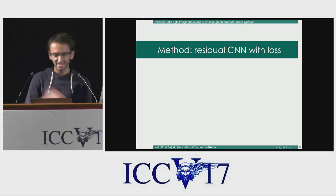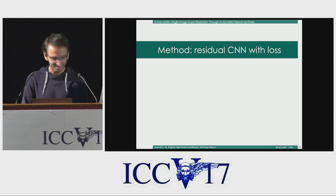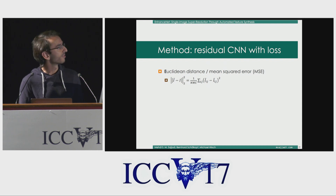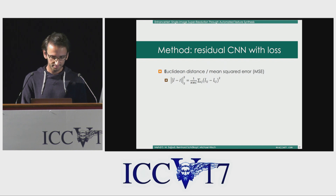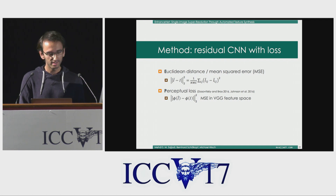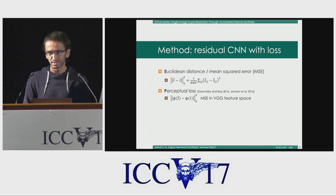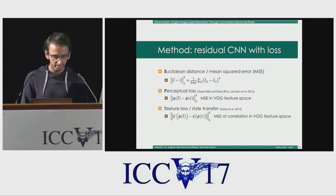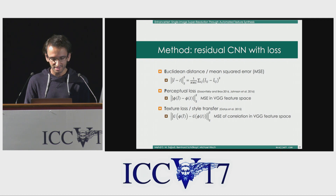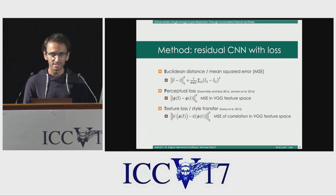So what do we do? We use a residual deep convolutional network — the architecture is not even that important — and we train it with a combination of different loss functions. The first loss is the mean squared error, which is what most people use. The second loss is the perceptual loss: instead of calculating MSE in the spatial domain, we feed both the estimated image and the ground truth into a pre-trained object recognition network such as VGG, and then we take the mean squared error in the feature space. The third loss is the texture loss, very famous from style transfer work. Instead of taking the loss on the VGG features directly, we first calculate the correlations of the VGG features and then take the mean squared error over those correlations.